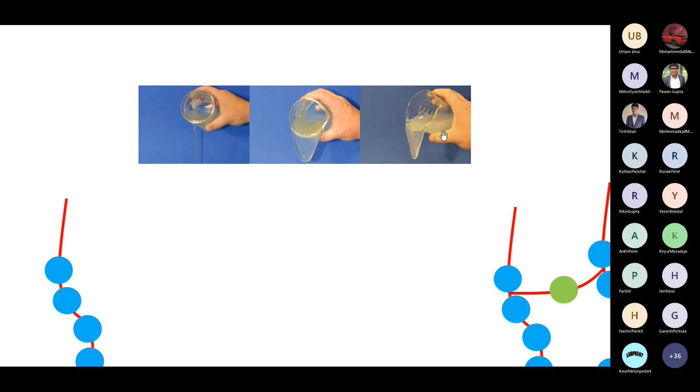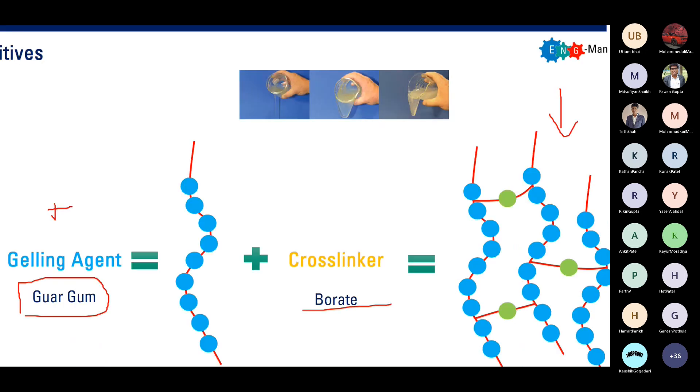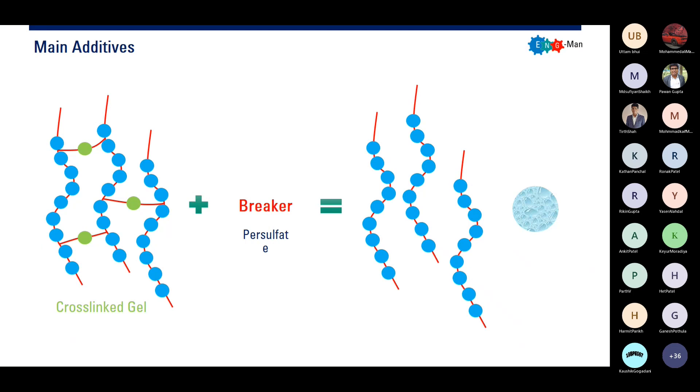After the frag fluid has successfully transported the propane into the reservoir and created fractures, we don't want it to stay there as gel. We want to break the gel so that it minimizes the formation damage, because gel will be formation damage. After the fracturing is completed, so we want to break the gel.